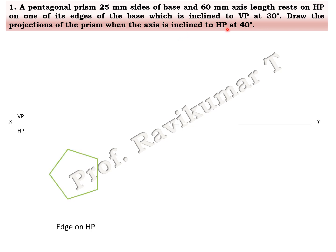First position is edge on HP, with the edge towards your right hand side. If you are looking from the top of the object, the pentagonal prism looks like a regular pentagon. It has a top face and bottom face. The top face is named ABCDE and the bottom face is named A1, B1, C1, D1, and E1. The bottom face is invisible from the top, so we name it in brackets. This is your top view of the pentagonal prism.